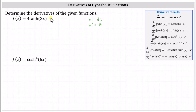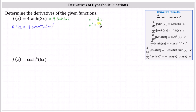If it's helpful, we can think of the given function as four hyperbolic tangent u, which indicates f prime of x equals four times the square of hyperbolic secant u times u prime. Now we substitute three x for u and three for u prime. Because u prime is three, four times three is 12, giving us 12 times the square of hyperbolic secant of three x.